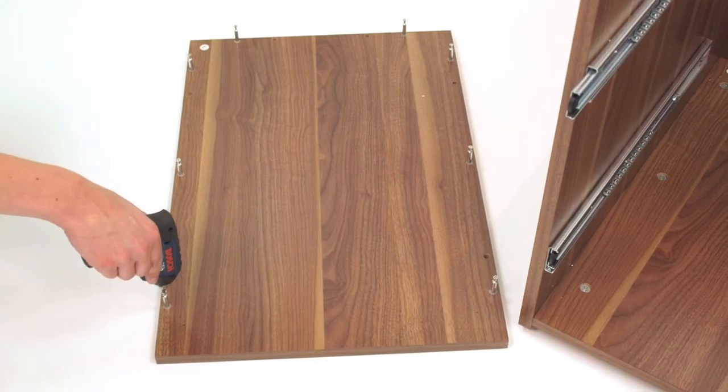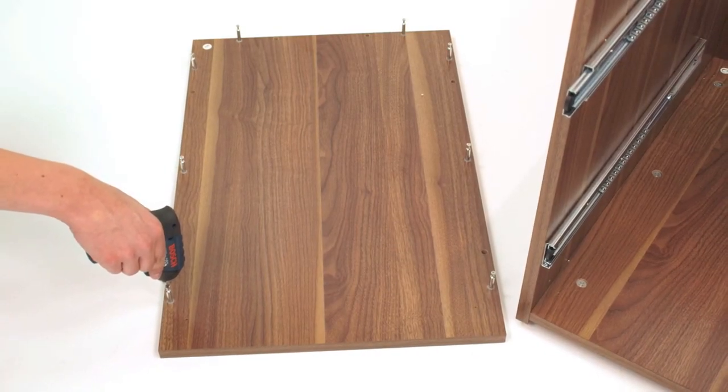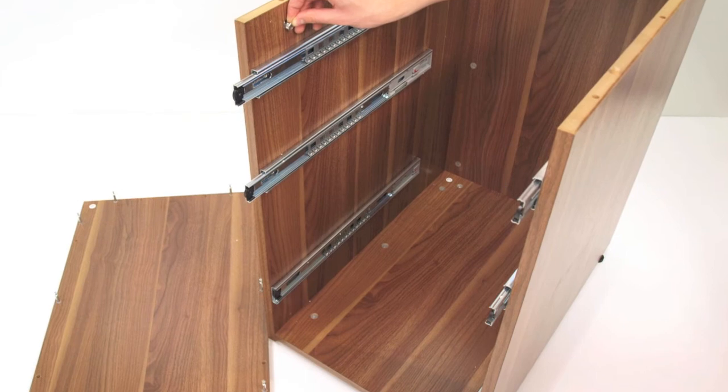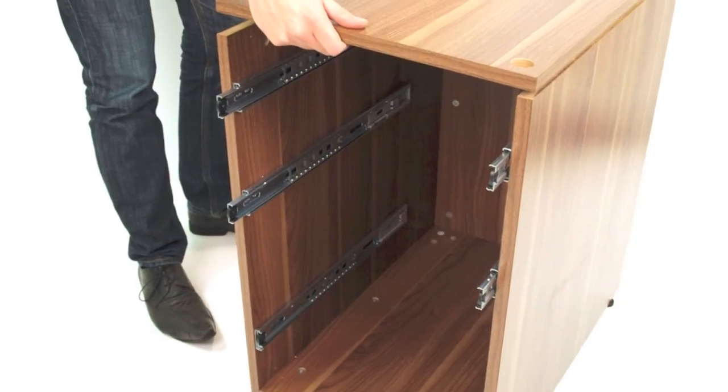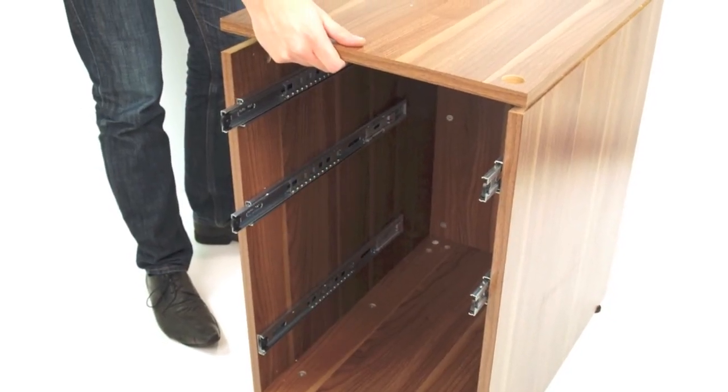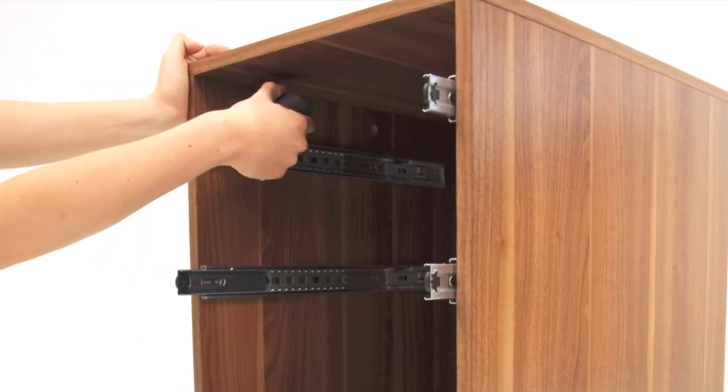Next, insert eight metal dowels into the top panel labelled E and insert the remaining metal cam fixings inside the drawer box. Push the top panel onto the drawer box and tighten all the remaining internal cams.